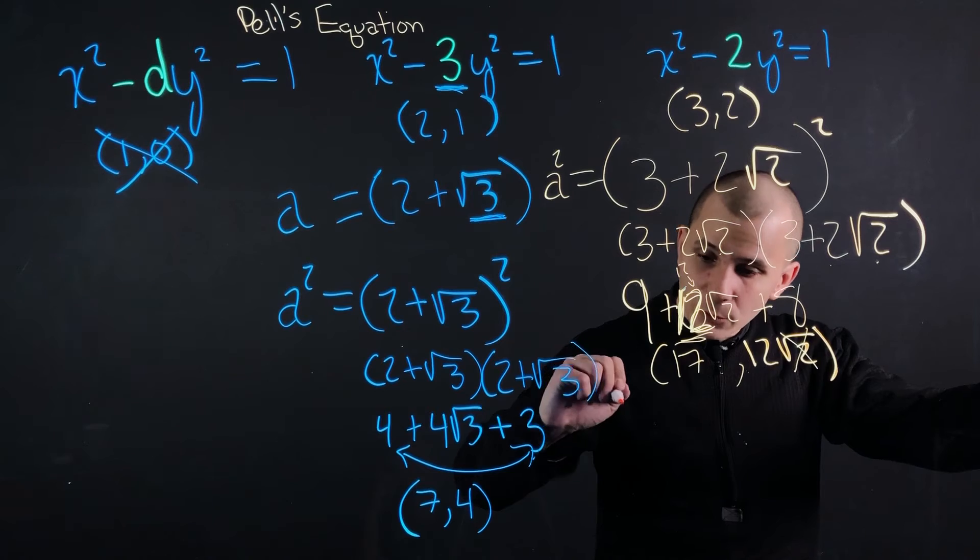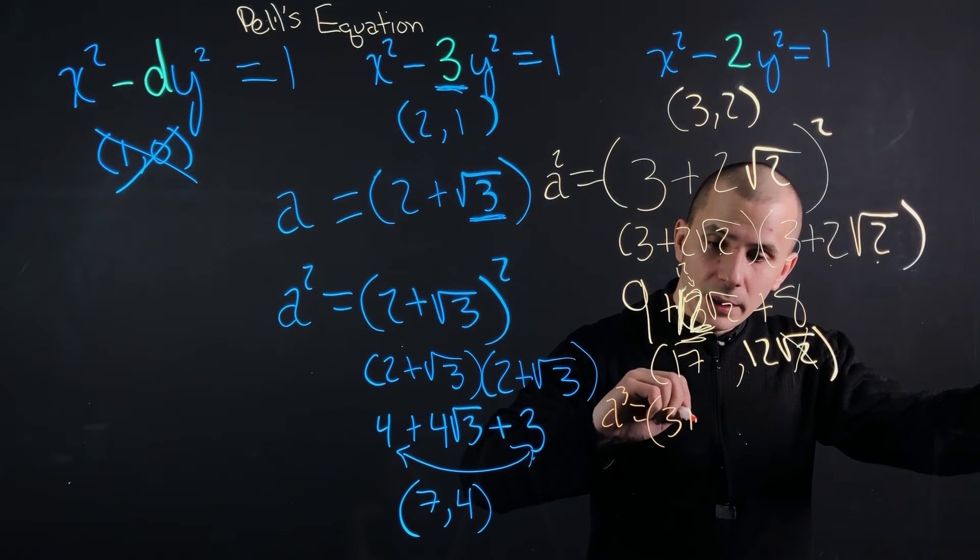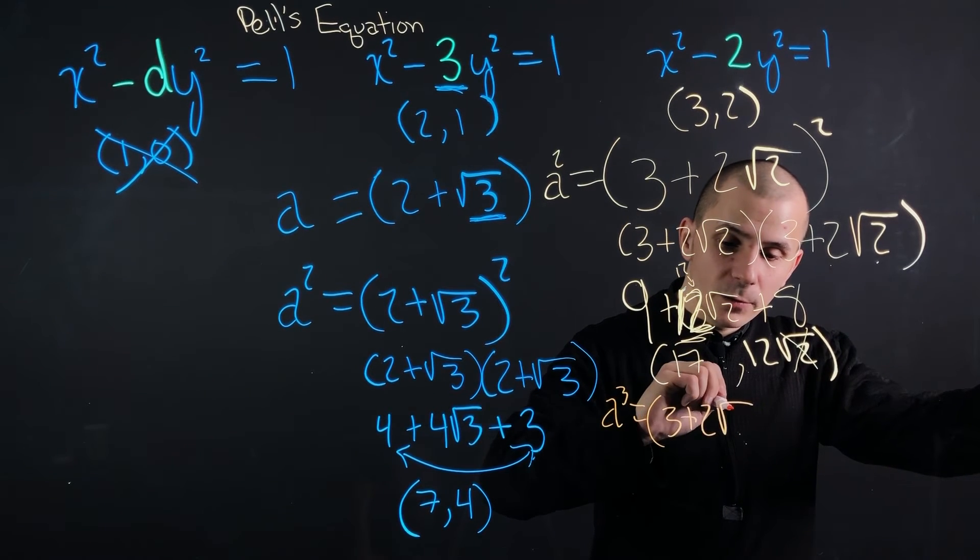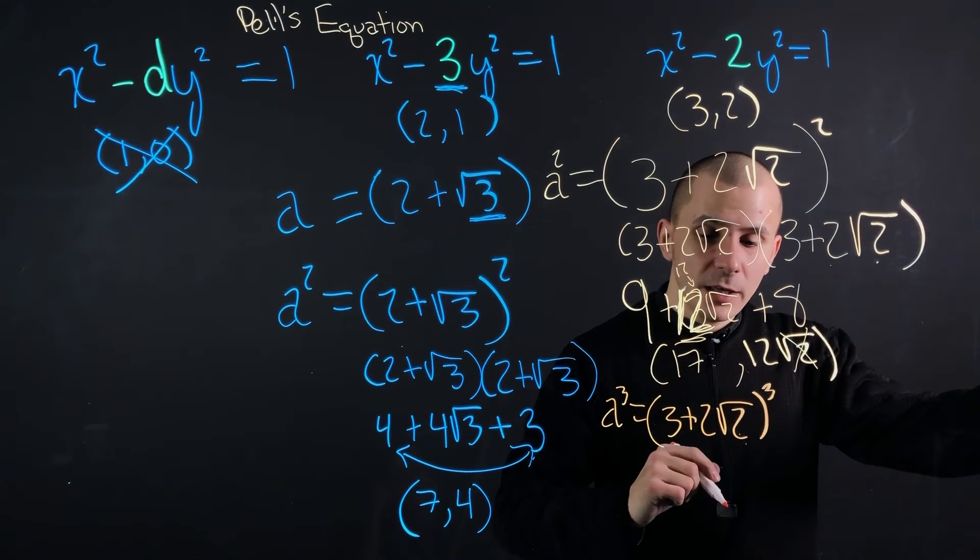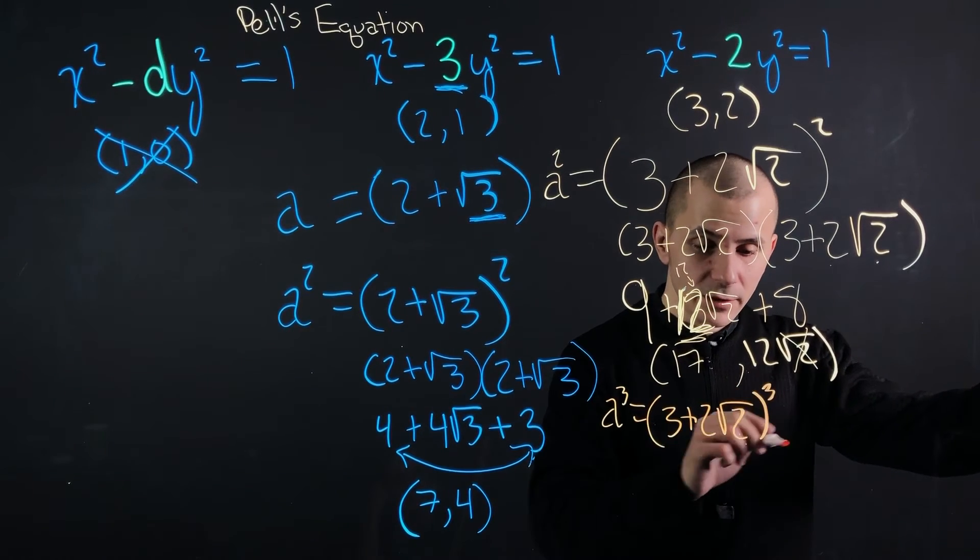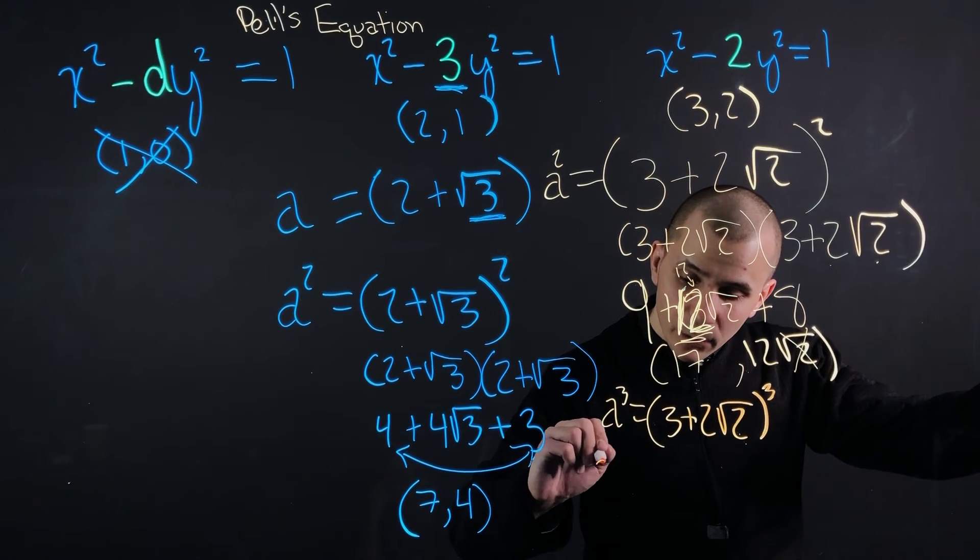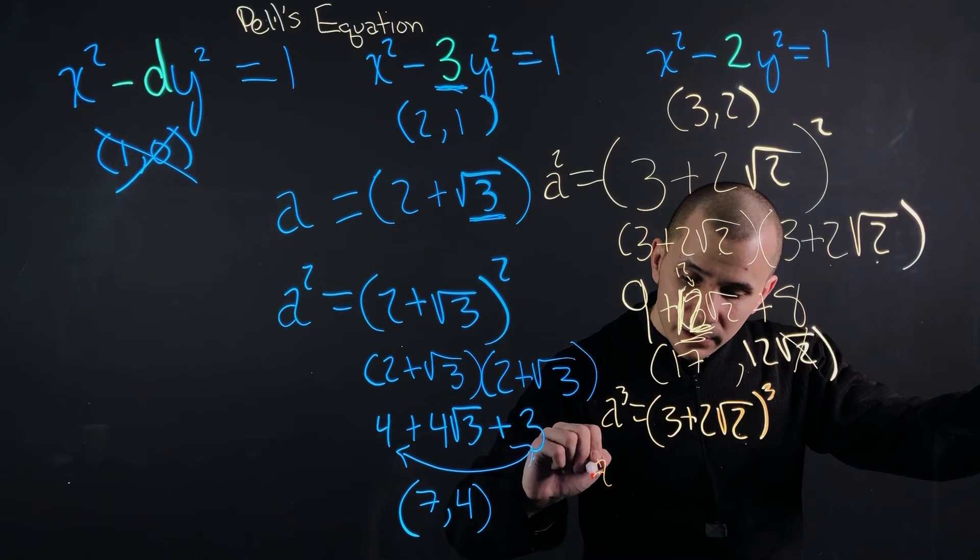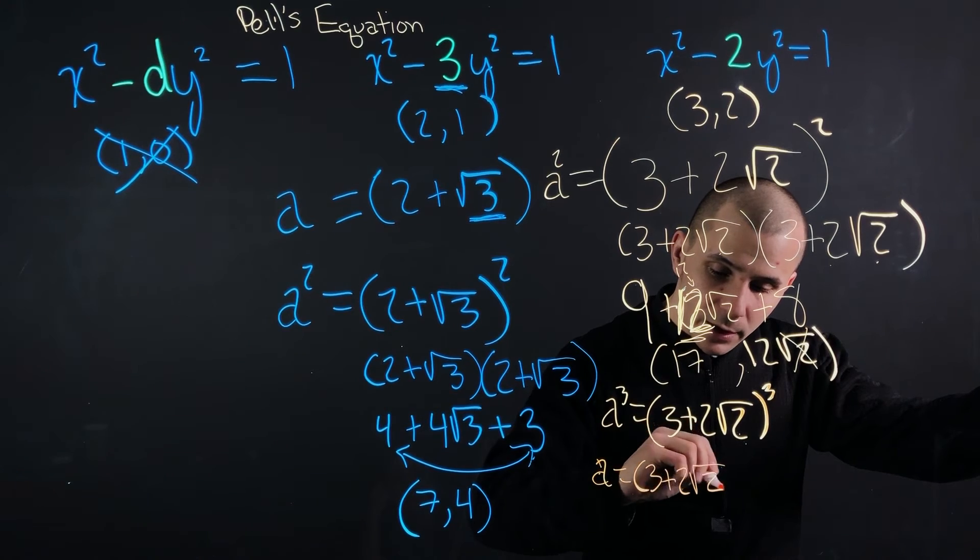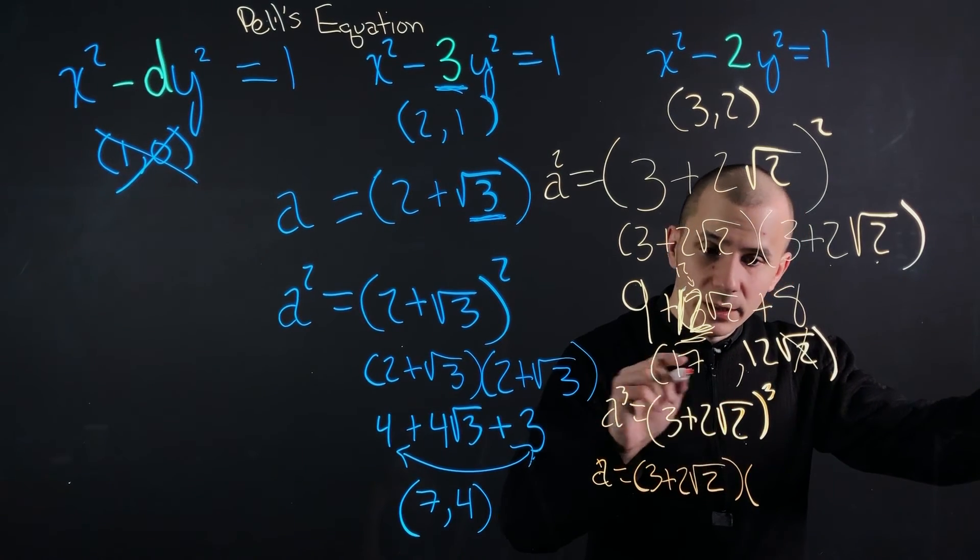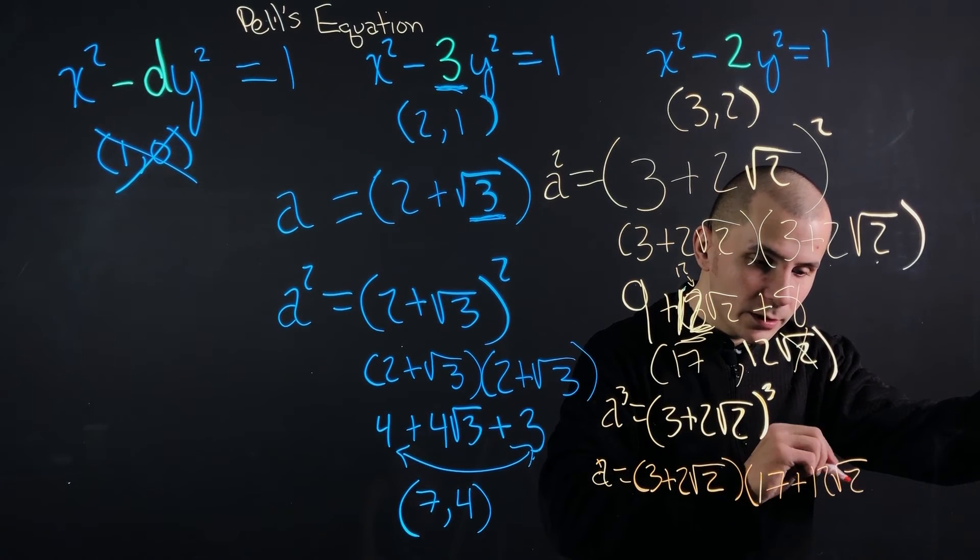So with our cube, we are going to take a³ = (3 + 2√2)³. So we already have 17 and 12 here. Instead of trying to figure this out again for the first two, because you can only foil two brackets at a time, what we are going to do is, we'll just do this here. So (3 + 2√2), and then we are going to take our answer, (17 + 12√2).